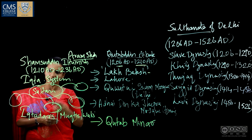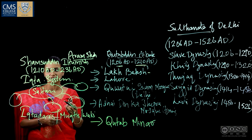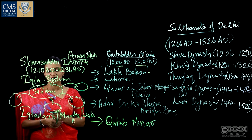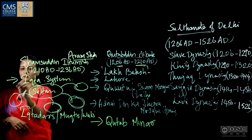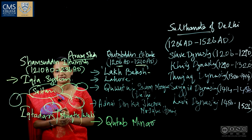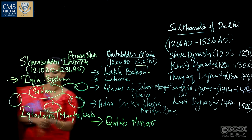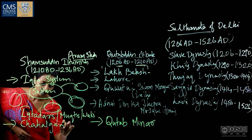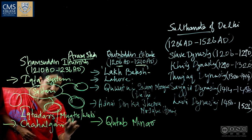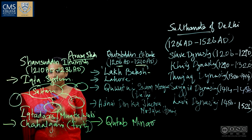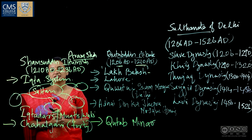The Iqta system was later imitated by the Mughals and the Vijayanagara empire under different terms like the Jagirdari or Amara-nayaka system. Iltimish also introduced the Chahalgani system. The Chahalgani, or 'The Forty,' was a group of Turkish slave nobles appointed by Iltimish to help him in his administrative affairs.